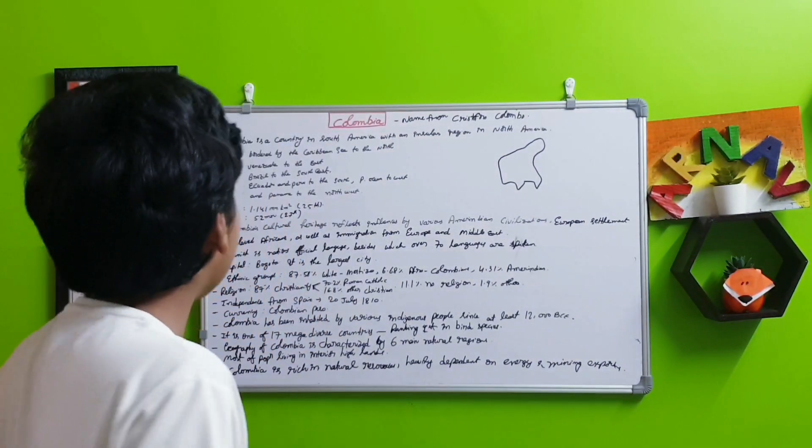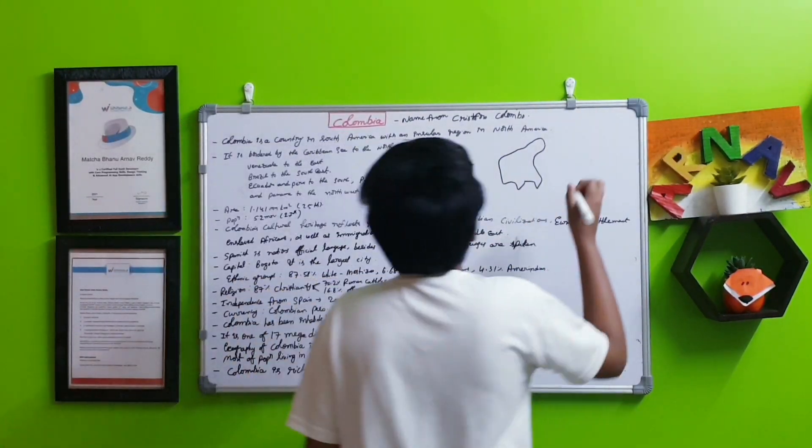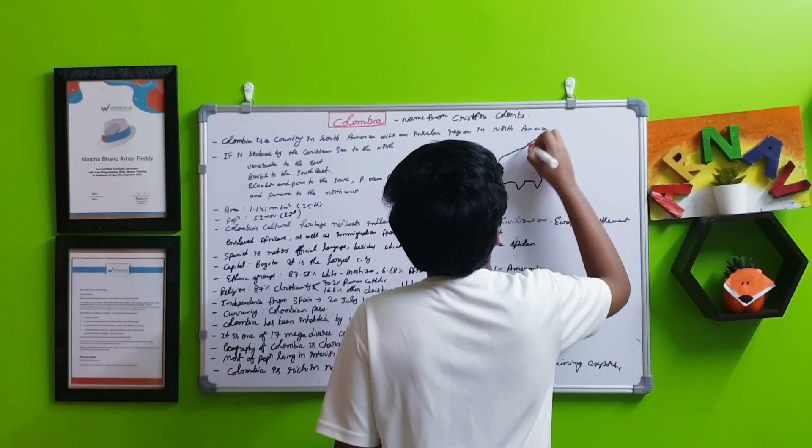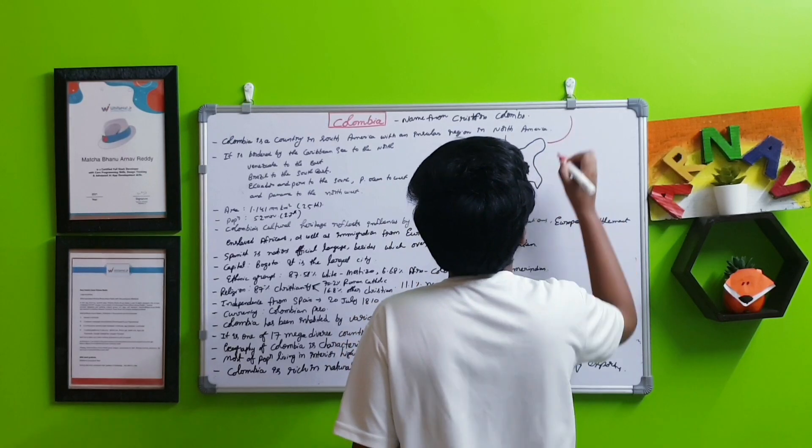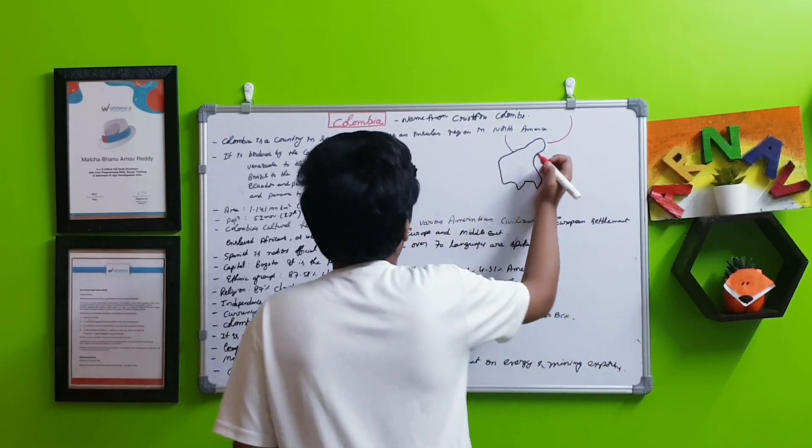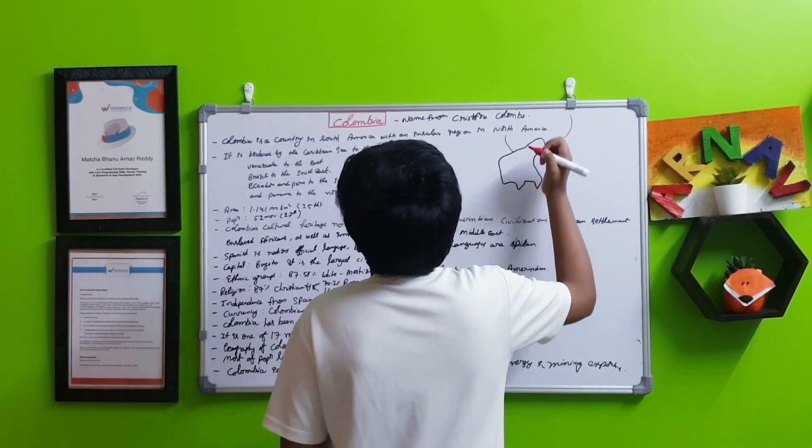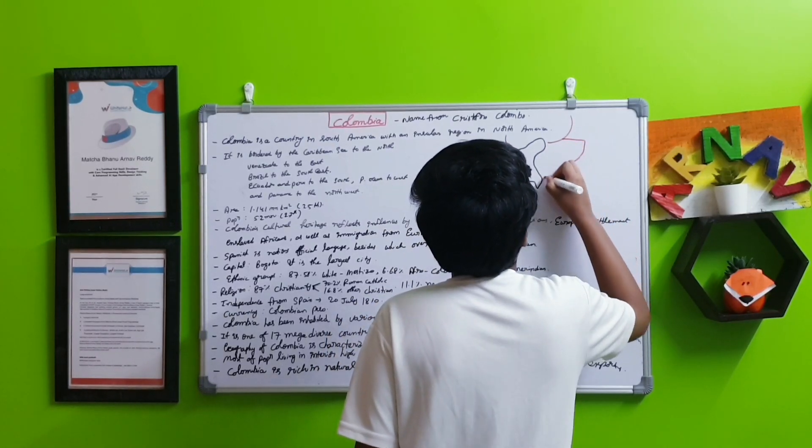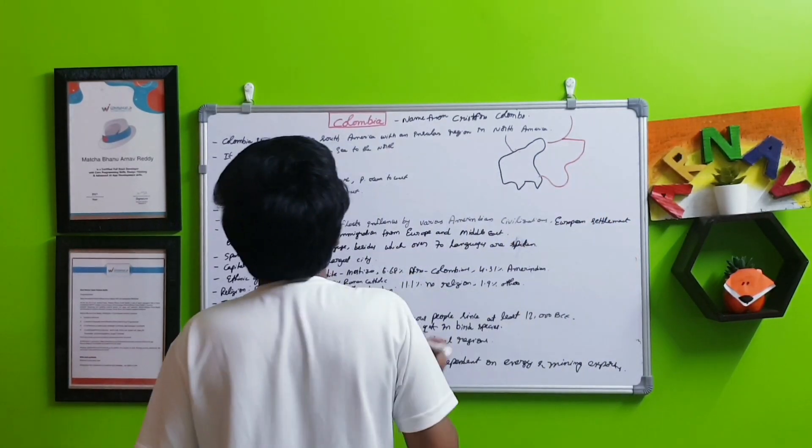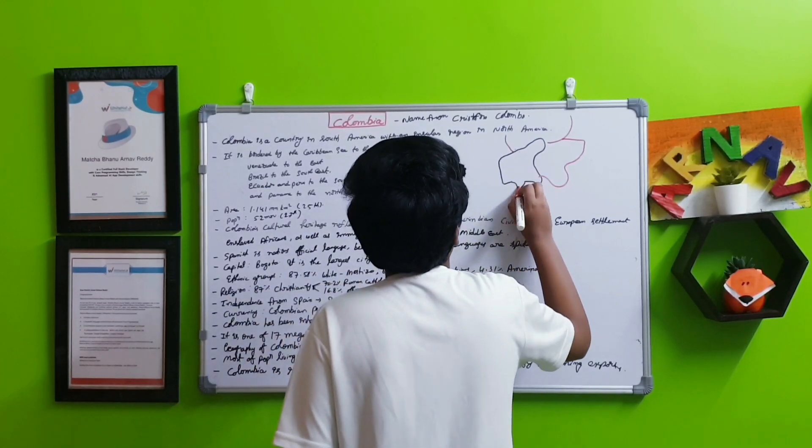First, there's the Caribbean Sea in the north. All of this is the Caribbean Sea, think of all of that as the Caribbean Sea. Next, to the east is Venezuela, kind of like that. Next, there is Ecuador and Peru to the south.